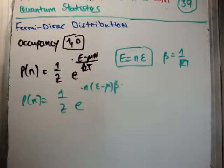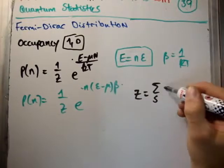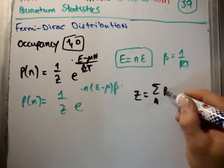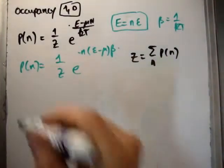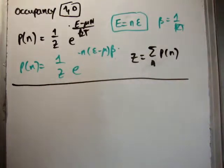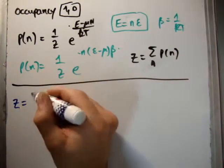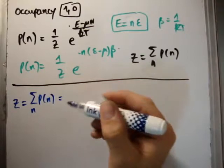In order to calculate the grand partition function, we need to get the sum of all these probabilities. z is equal to the sum over n of P(n). That's what the grand partition function is. Let's go ahead and calculate it - it's easy because of the occupancies, 1 or 0.